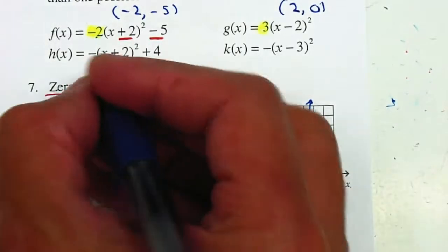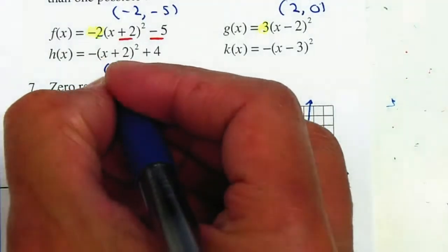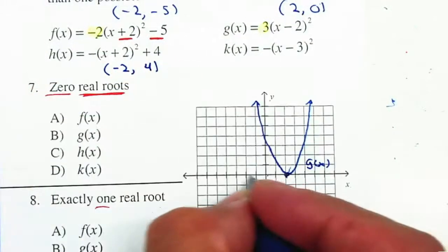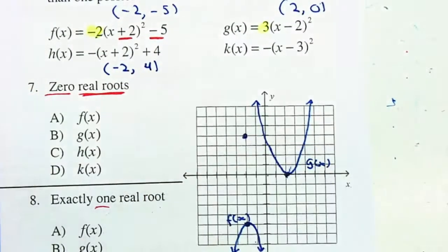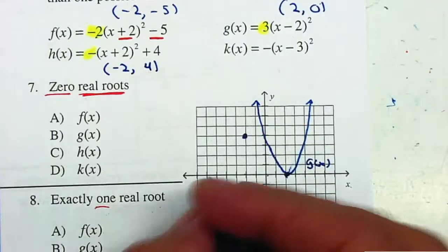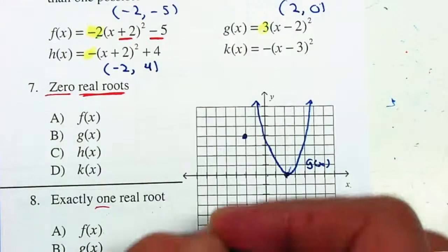H of x, your vertex is negative 2 and positive 4. I'm going to go to the left 2 and 2, 4. And my parabola is facing down. So therefore, my parabola is all the way down.